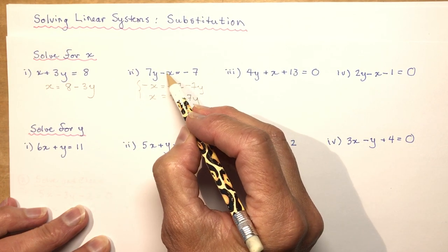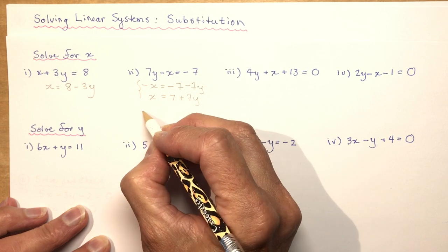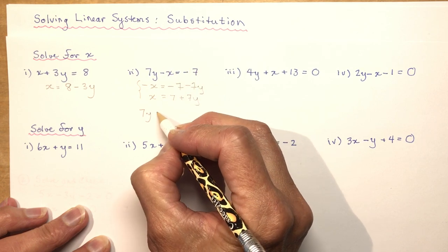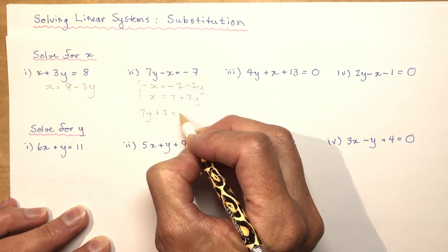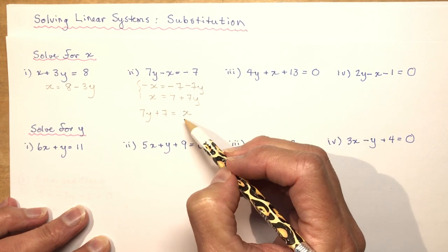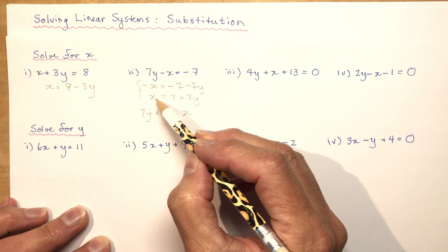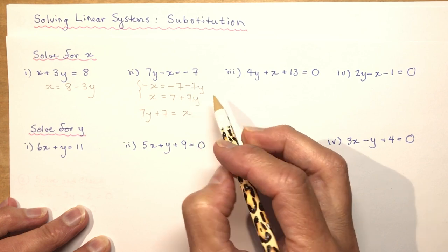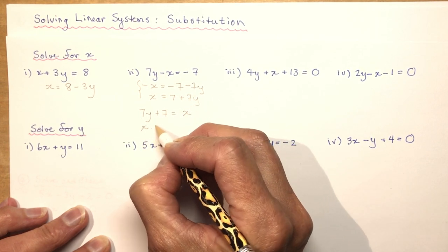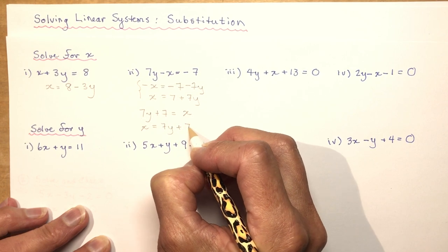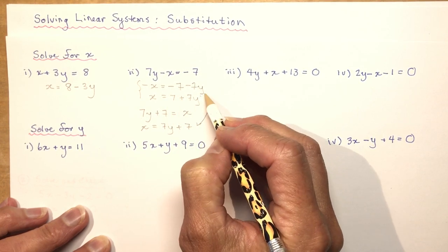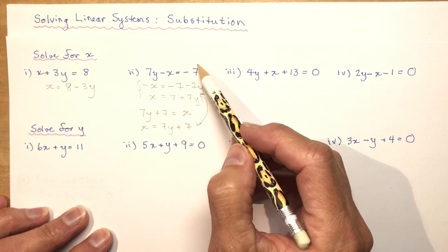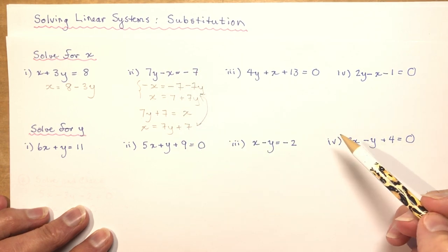Option 2 is to move the x across the equal sign, leave the 7y, and bring the minus 7 over to make it plus 7, so that equals x. Whether you write x equals this or this equals x, these are the very same equations. Bringing the negative x over is probably the easiest method.